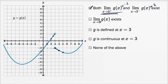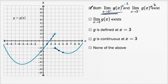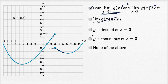The limit of g of x as x approaches three exists. In order for this to exist, both the right and left-hand limits need to exist and they need to approach the same value. We saw that both one-sided limits exist, but they aren't approaching the same value. From the right we are approaching negative two, and from the left we are approaching two. So this overall limit does not exist, and I will not check that box.